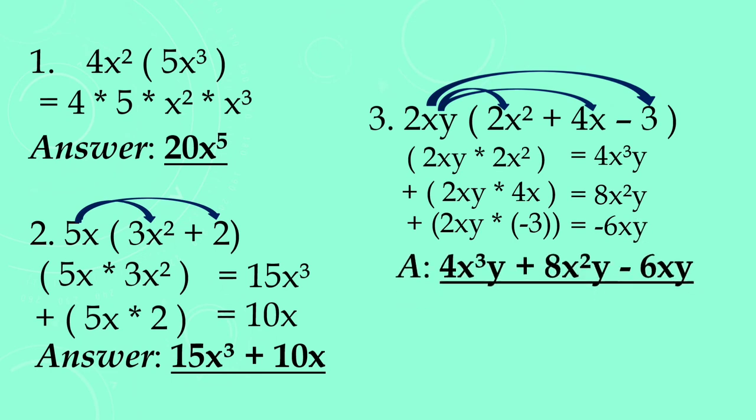So ang ating final answer, we have 4x³y plus 8x²y minus 6xy. Ganun lang po kadali mag-multiply ng polynomials. So ito, pinakita ko sa inyo yung monomial to monomial, monomial to binomial, and monomial to trinomial. So sana naintindihan nyo yung ating lessons. Huwag kakalimutan, pag nag-multiply tayo ng polynomials, i-multiply lang natin yung mga numbers, at the same time multiply din natin yung mga variables using the law of exponents.